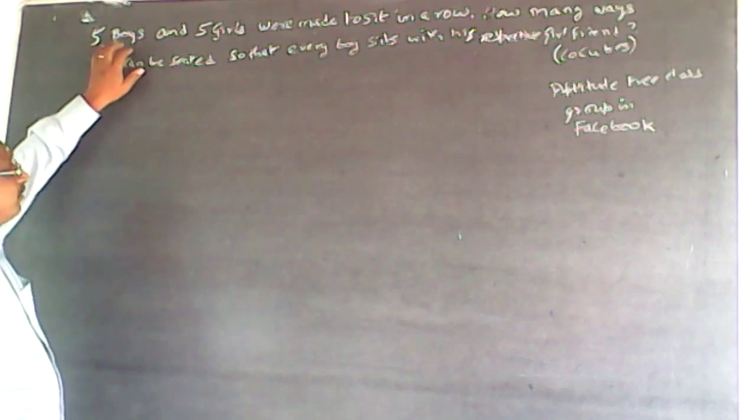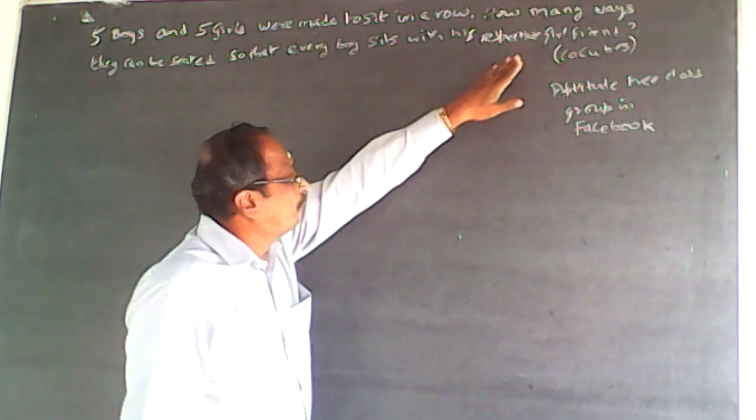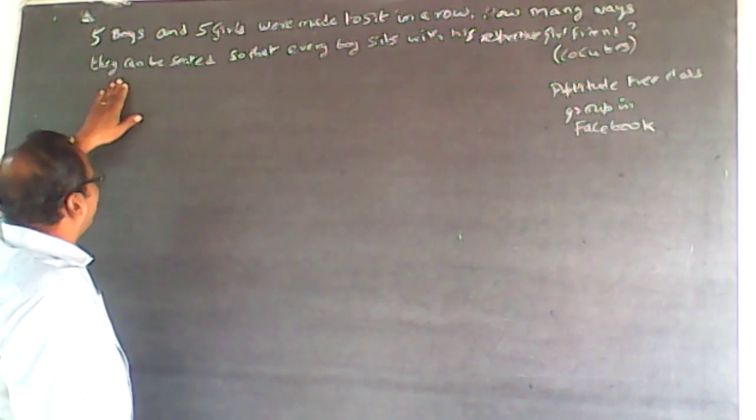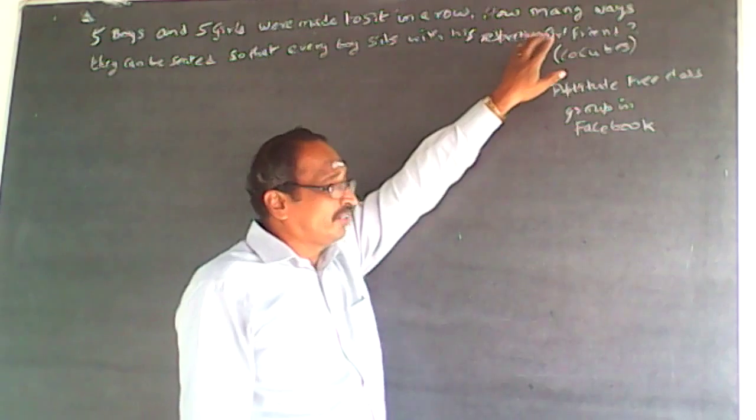The question is: five boys and five girls were made to sit in a row. How many ways they can be seated so that every boy sits with his respective girlfriend?